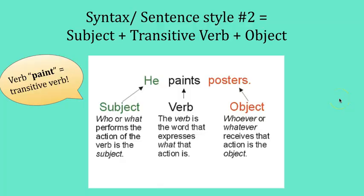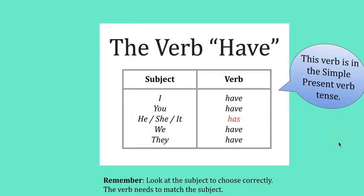One very common transitive verb that we use in English is the verb 'have': I have, you have, he has, she has, it has, we have, they have. When we use this verb we need to follow the verb with a direct object. Here I am showing you how to use the verb 'have' in the simple present tense.